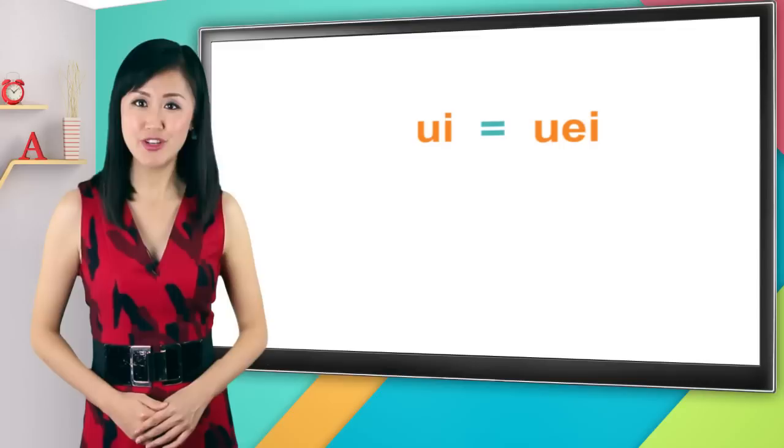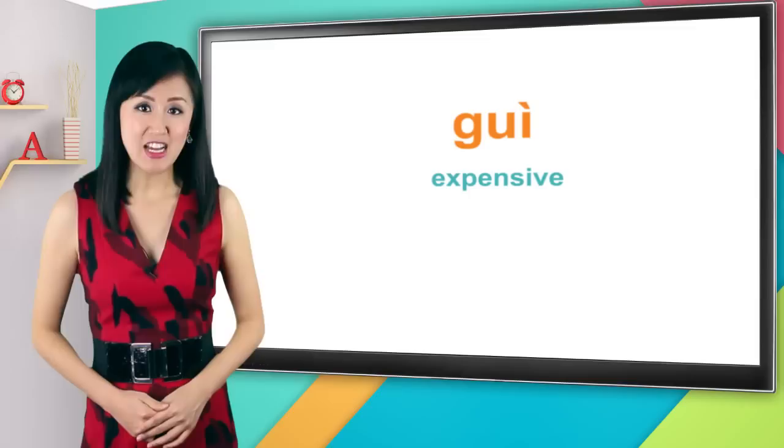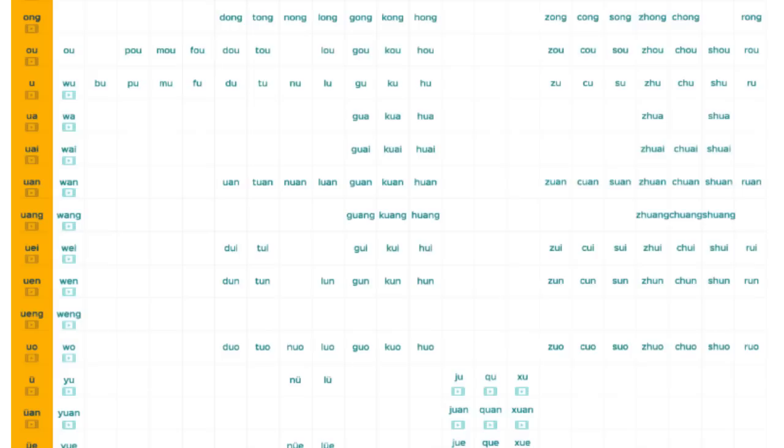Remember this rule: in pinyin u-i equals u-e-i and vice versa. So whenever you see u-i, please mentally add an e and consider u-i as u-e-i. So gui is actually short for g-u-e-i, alright.